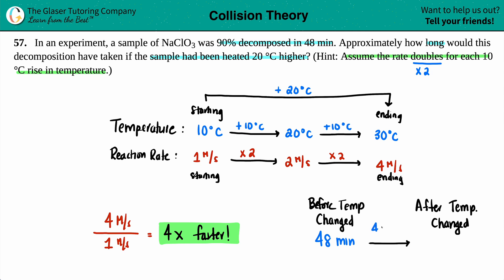So four times faster, that means that your time is going to drop by four times. Essentially what we're doing is we're taking 48 and dividing it by four. 48 divided by four is 12. So how long would this take? It would have taken 12 minutes instead of 48 because we know that it's going to be four times as fast. That's a lot of cutting back on time.